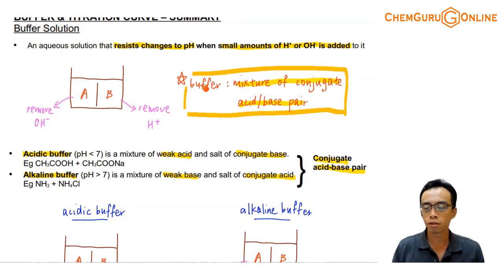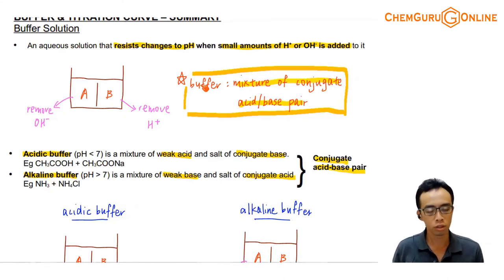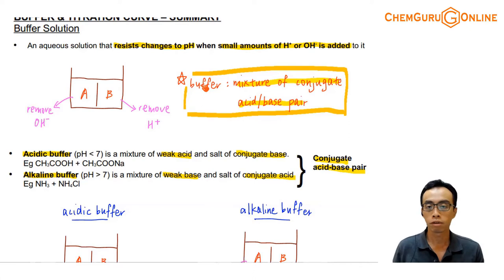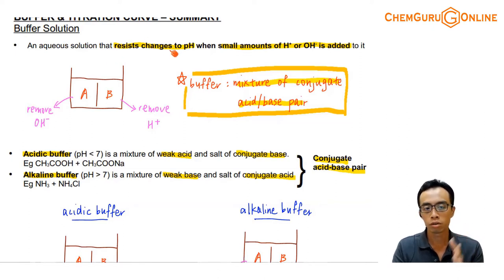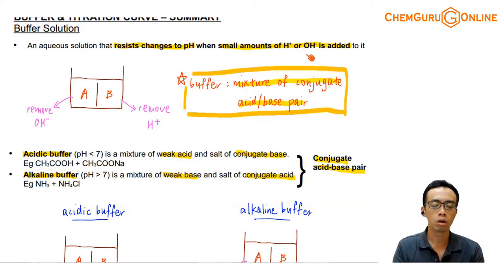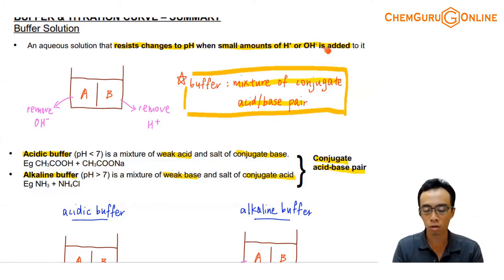A buffer solution is actually not very difficult to understand — we just need to run through a few concepts. By definition, we usually define a buffer in terms of its function: a buffer is a solution that can resist changes to pH when you add small amounts of H+ or OH-. It resists changes to pH, or maintains pH, when you add small amounts of H+ or OH-.